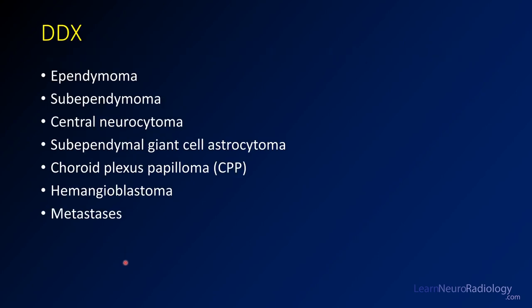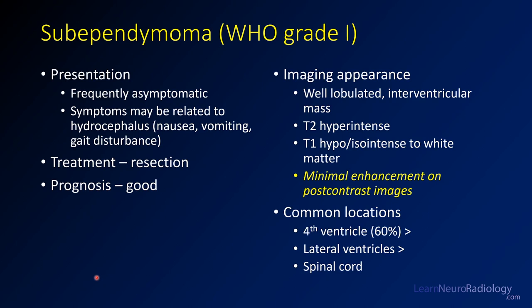This case really has a broad differential. You can have ependymomas or sub-ependymomas that look like this, central neurocytomas can definitely look like this as well, sub-ependymal giant cell tumors (SEGAs) common in tuberous sclerosis patients, choroid plexus papillomas or choroid plexus tumors, hemangioblastomas, and metastases — all in the differential. But it's more classic for one diagnosis, and that's a sub-ependymoma.